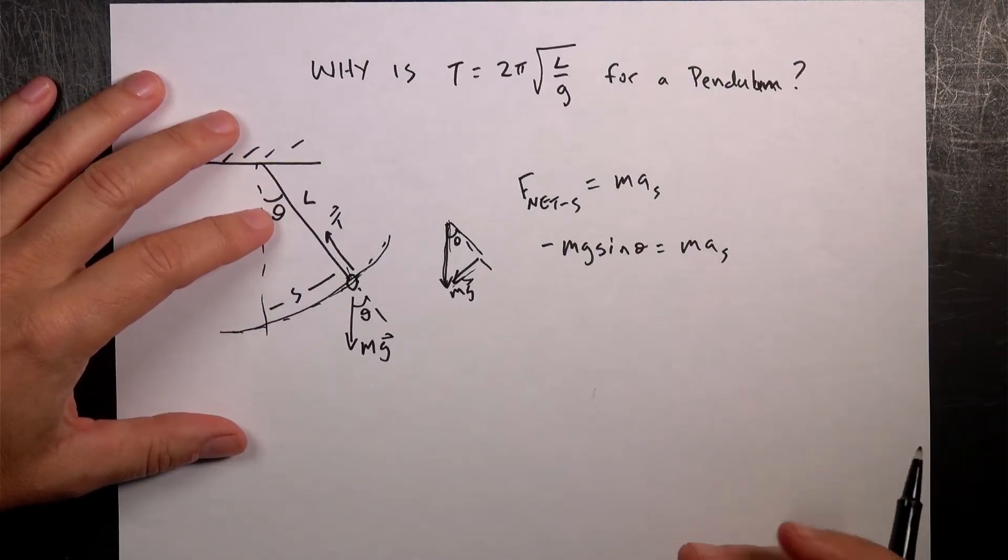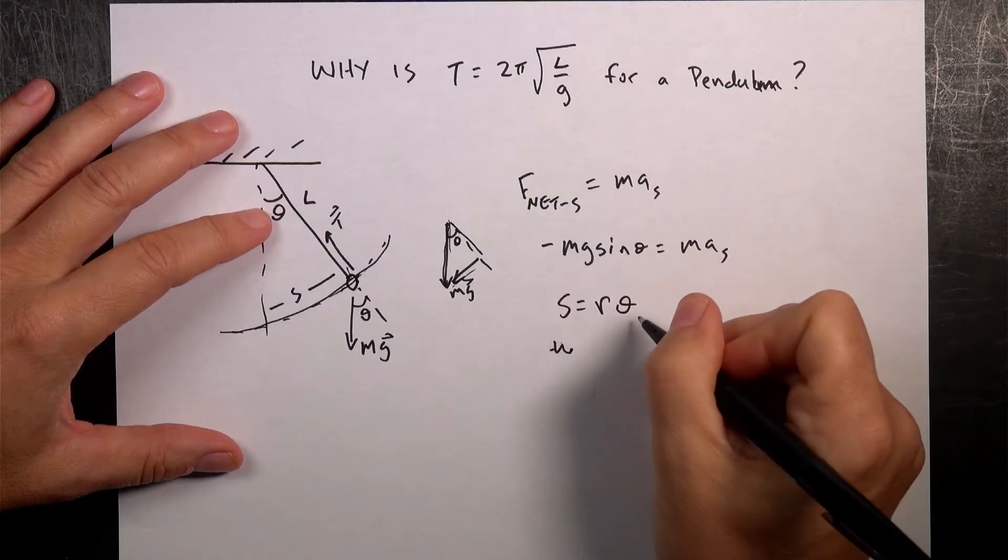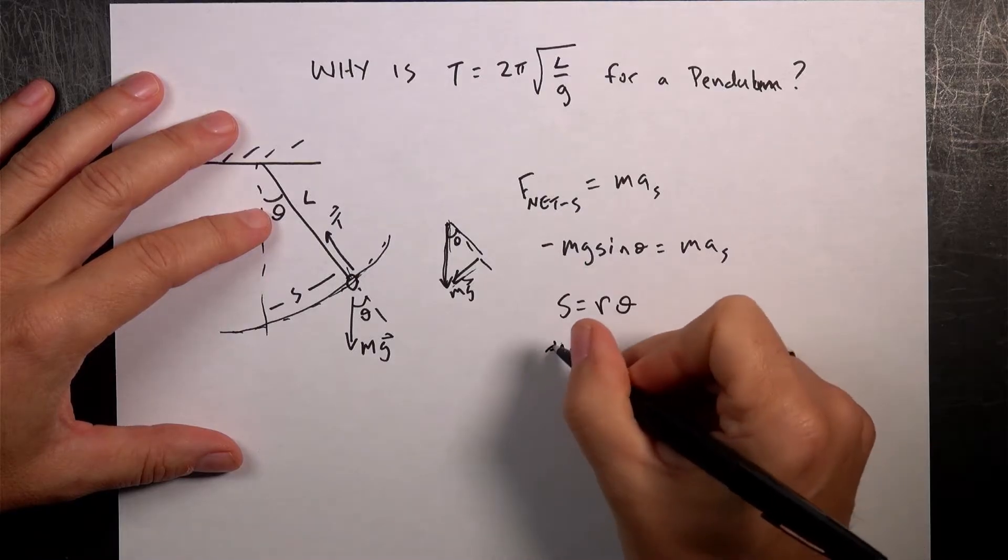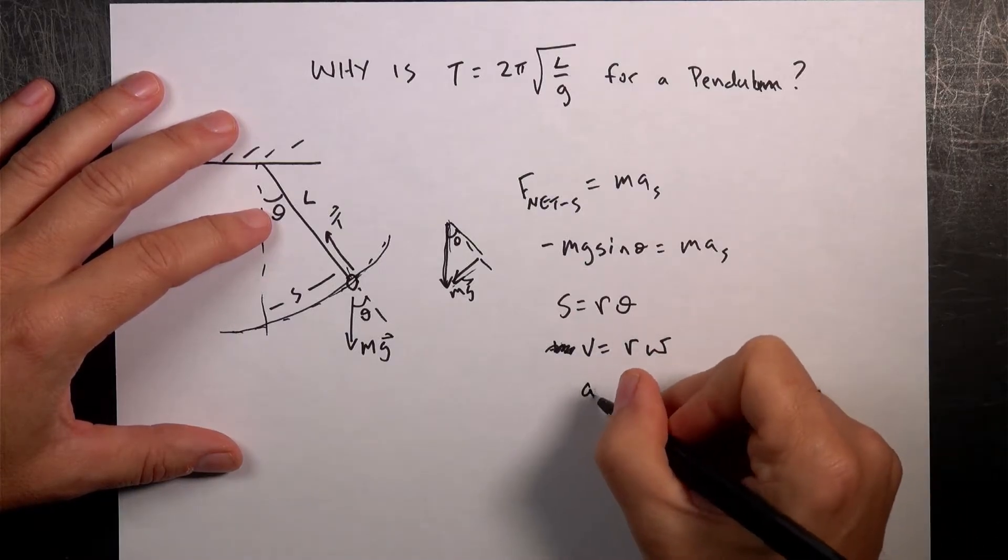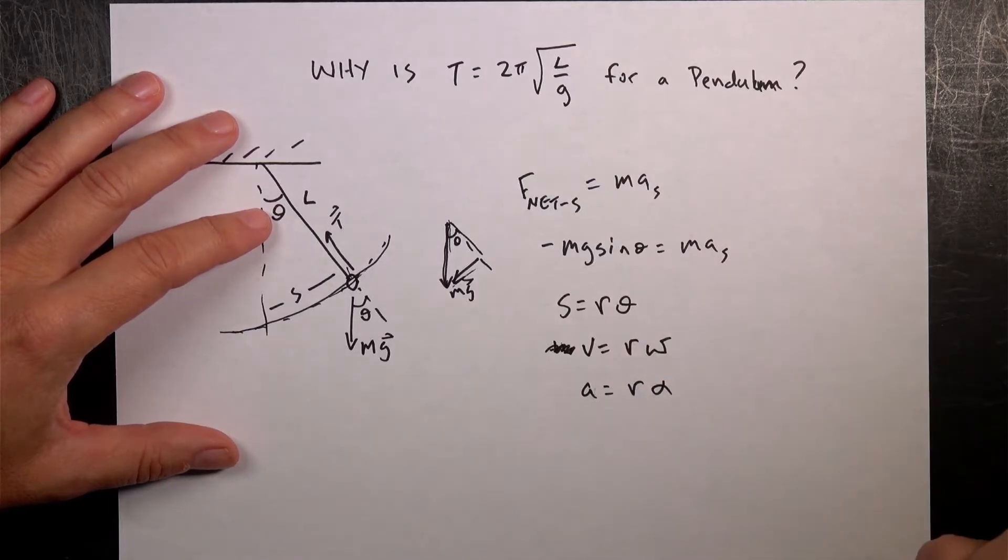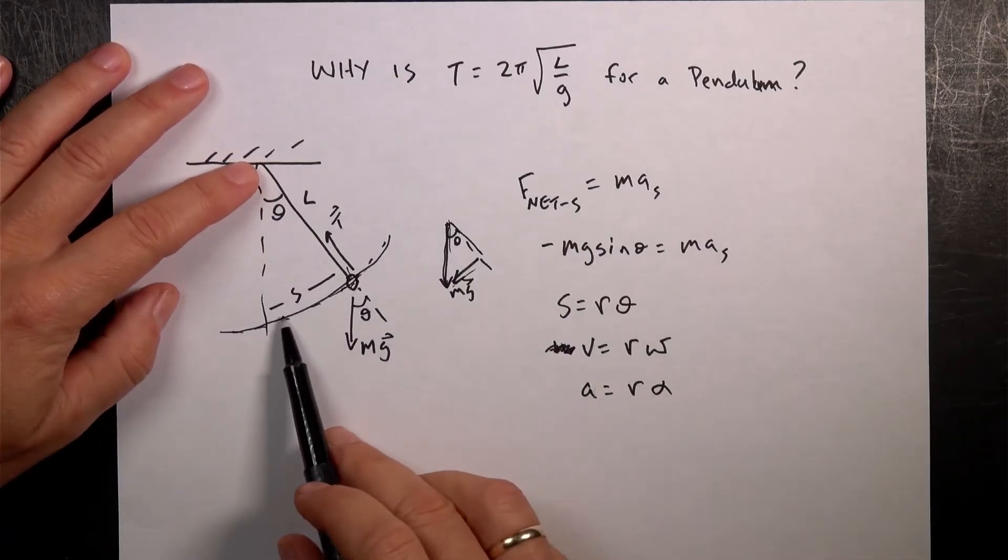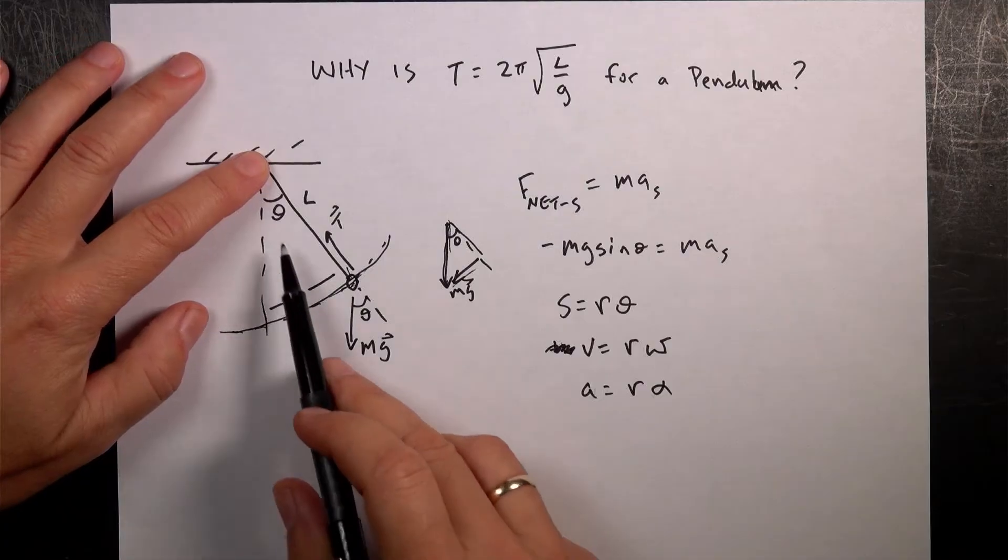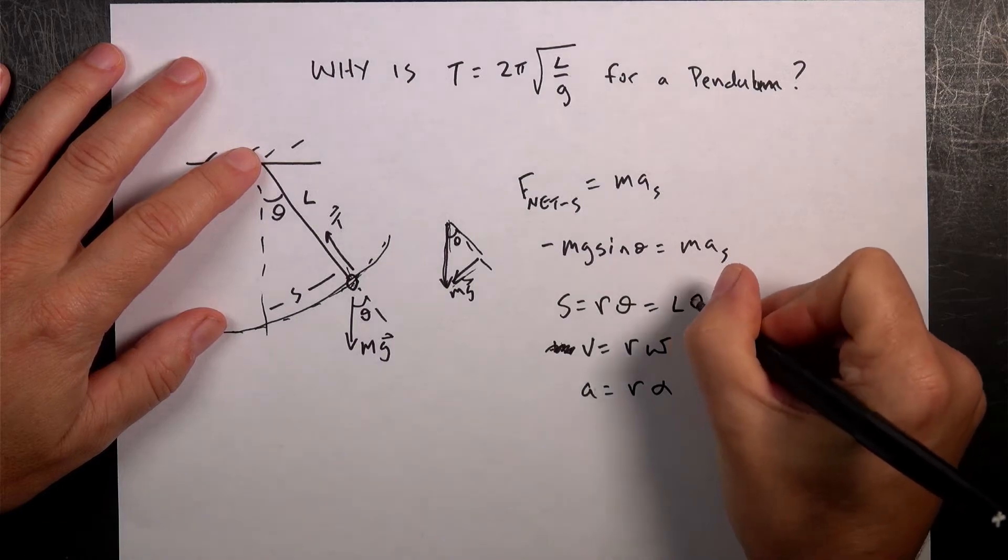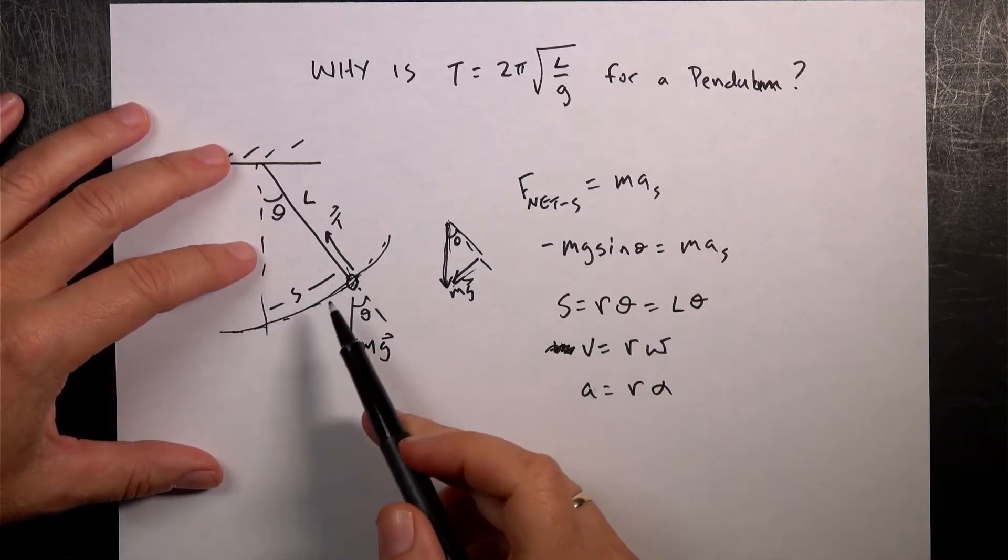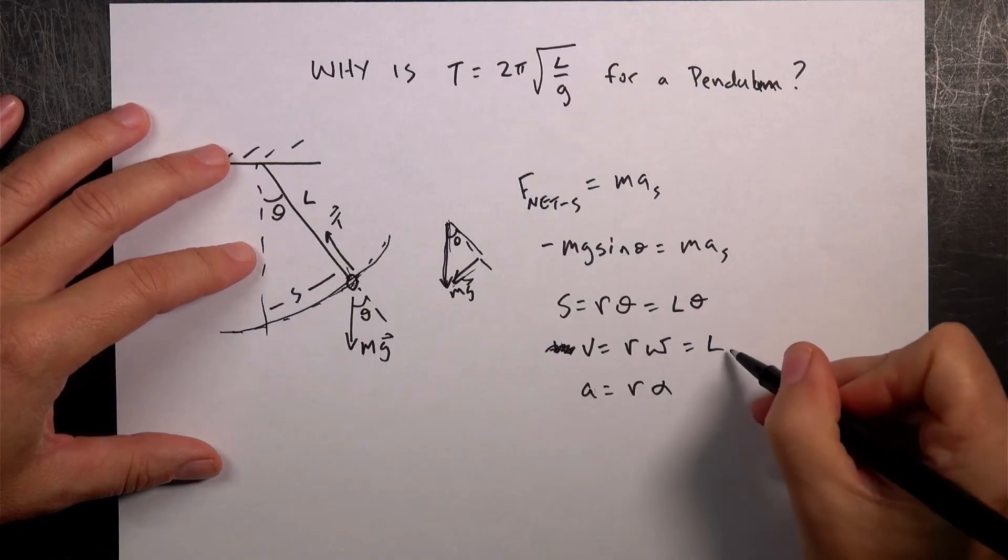Now, I need to get the acceleration in terms of the angle, too. So, if you remember your relationships between quantities, we have this. S equals R theta, V equals R omega, A equals R alpha. Do you remember that? So this says that if I move a certain distance along this arc length, and I take that angle in radians and multiply it by the radius of the circle, which is L in this case. So it's actually going to be L theta.